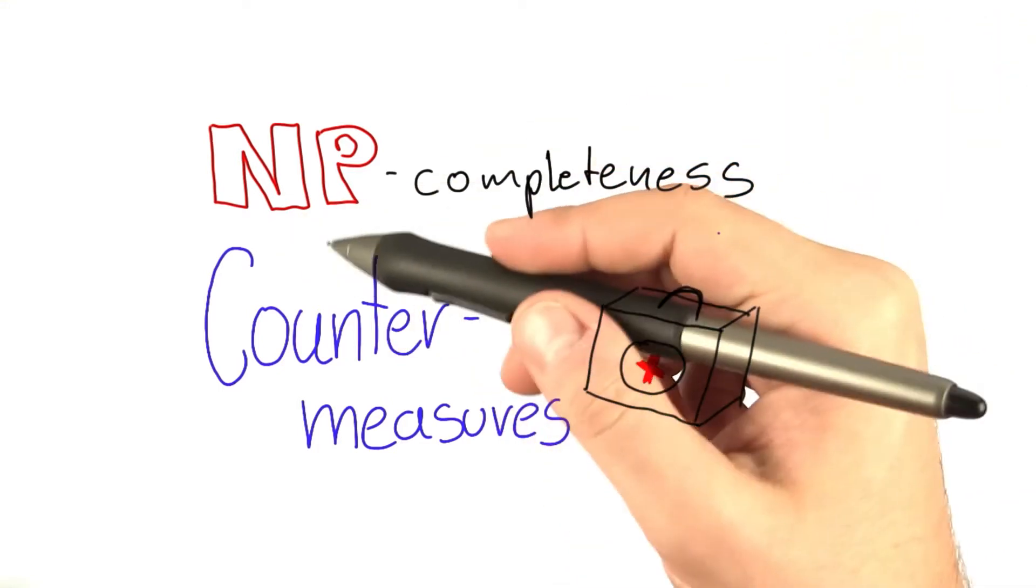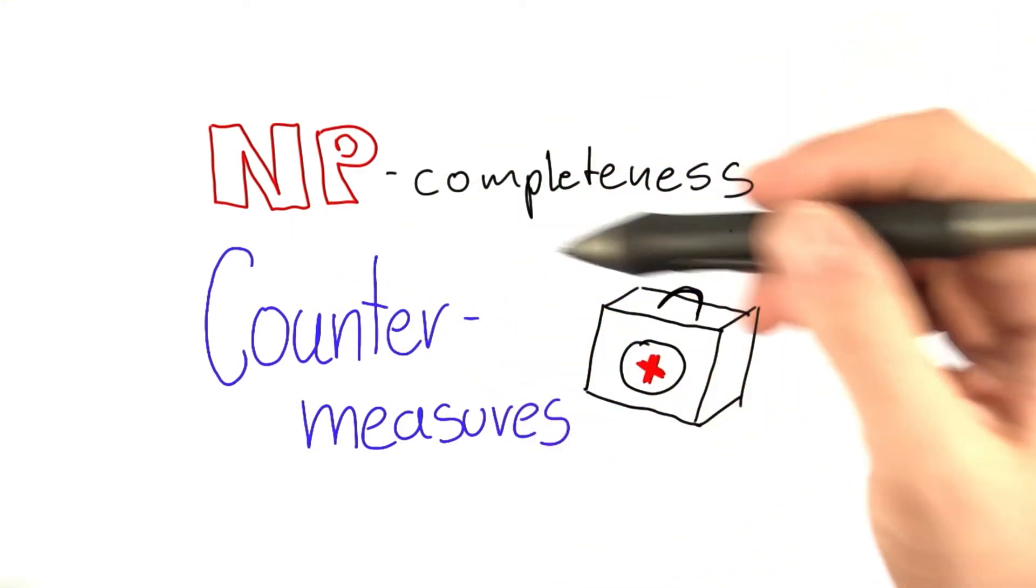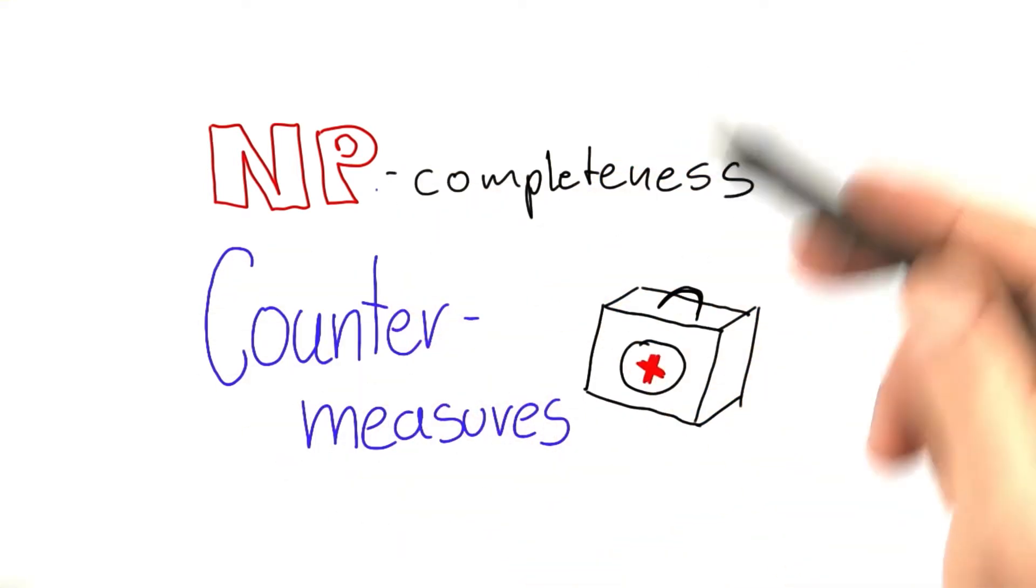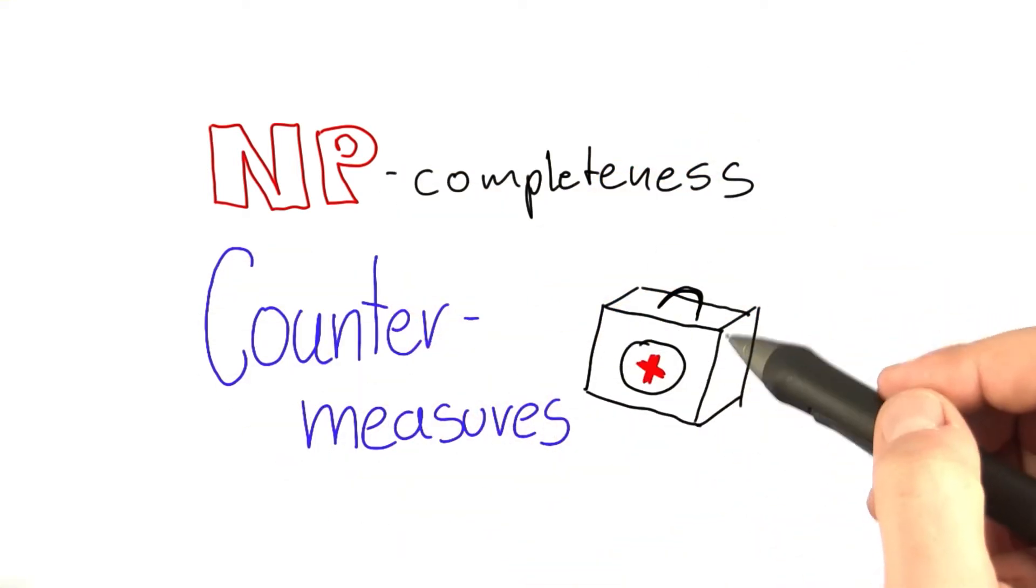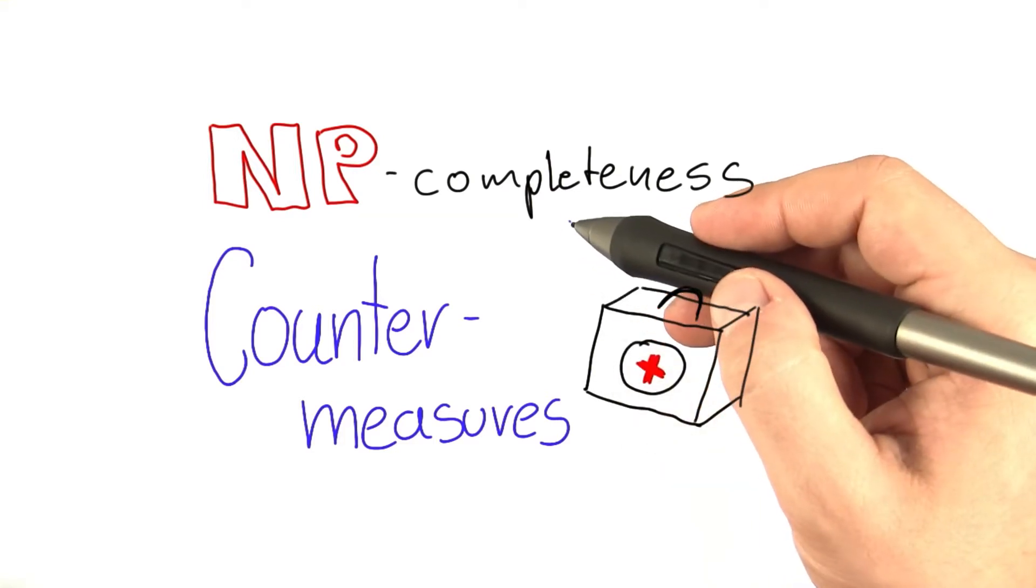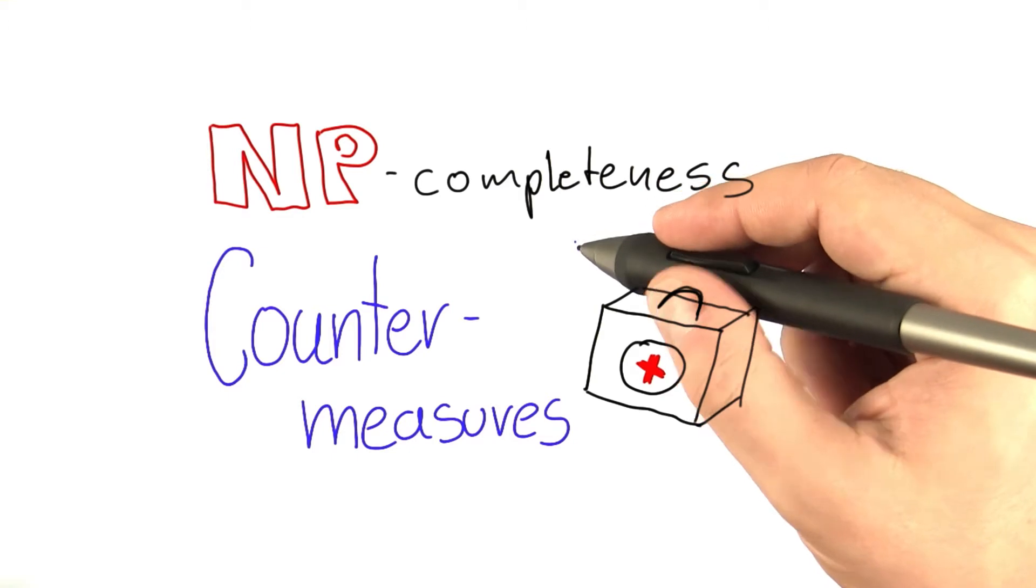And that is why we're now going to turn our attention to countermeasures against NP-completeness. So this unit and the following units are your first aid kit to help you overcome NP-completeness, or at least take a bit of the sting out of them.